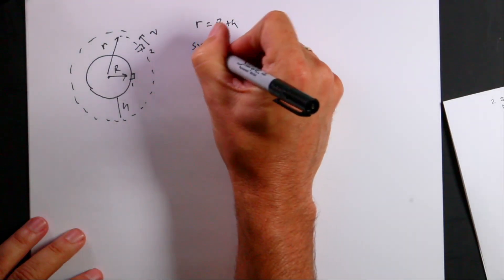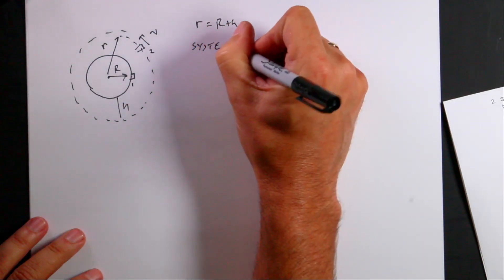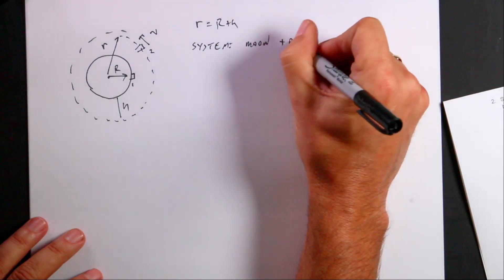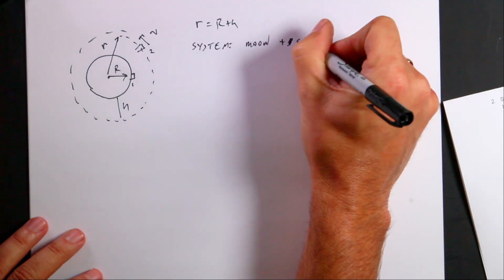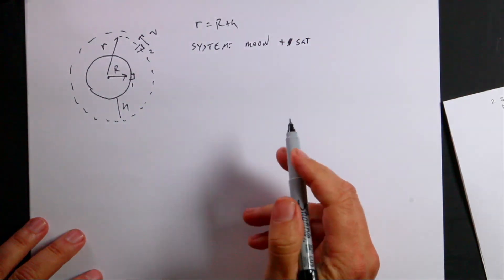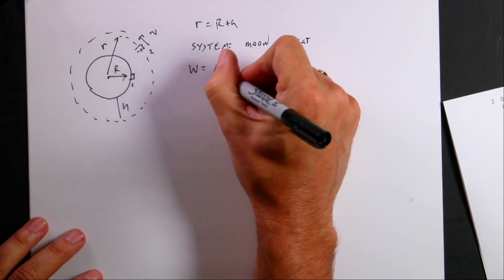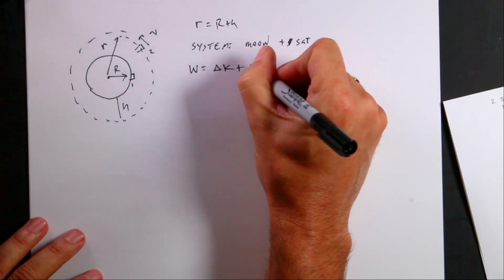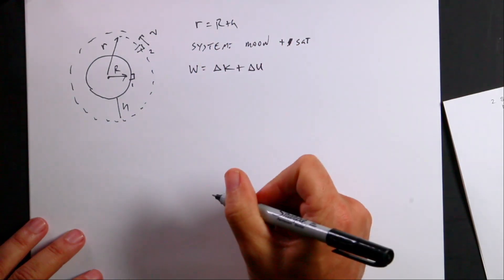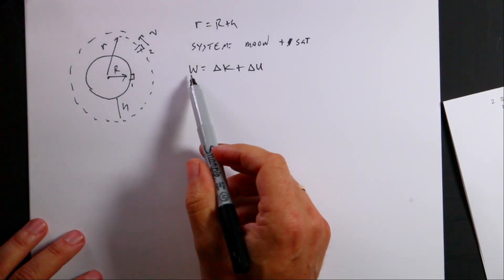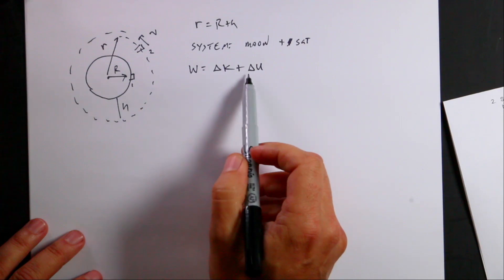And so I'm going to go from position one to position two. So let's say my system is the moon plus the satellite. I was going to write out plus. Plus satellite, and I can never spell satellite correctly, so I'll just put sat. In that case, I can say work is the change in kinetic energy plus the change in gravitational potential energy. And going from one to two, I want to find the work.